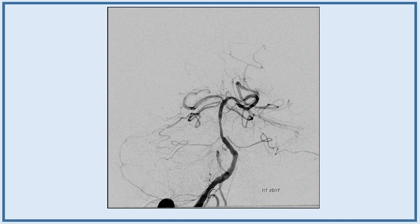This is what it looks like on first pass — we have a TICI 3. Notice this tunnel we made here looks pretty much the same size as the Sophia 6. We have some residual stenosis here. So again, this is an atheromatous occlusion.